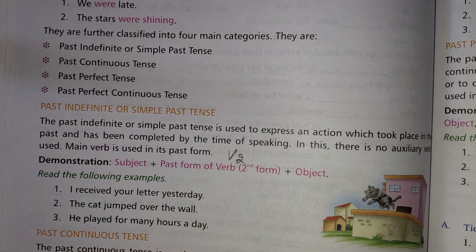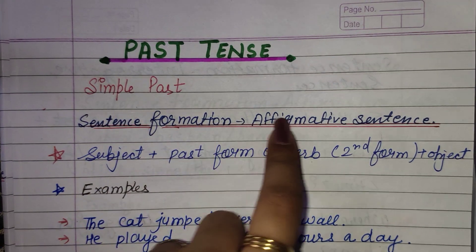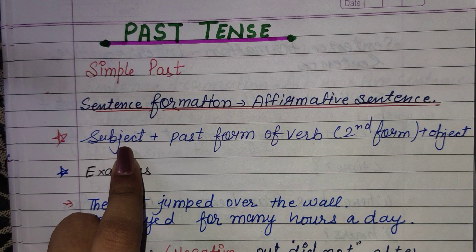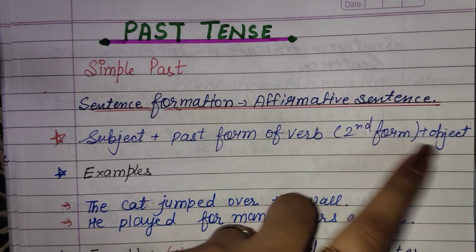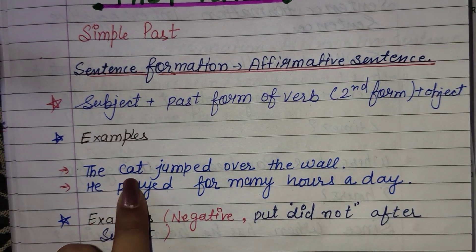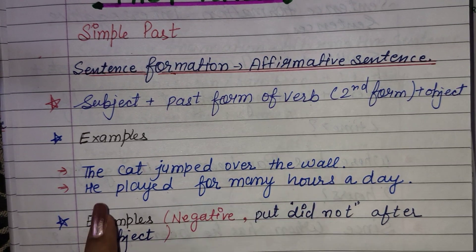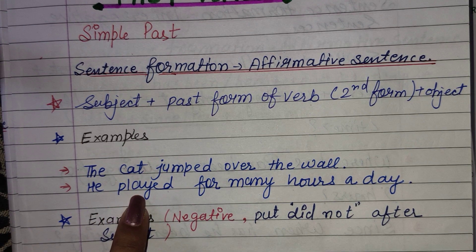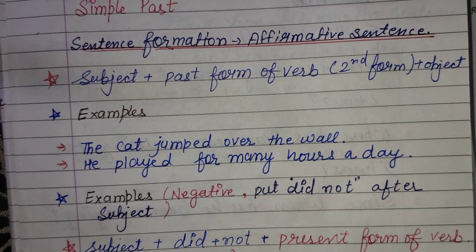Let's look at sentence formation for affirmative sentences. You write the subject first, followed by the second form of the verb, then the object if there is one. For example: 'The cat jumped over the wall' — jumped is the second form of jump. 'He played for many hours a day' — played is the second form of play.